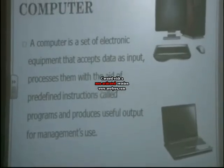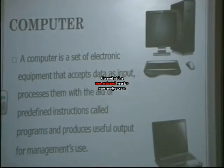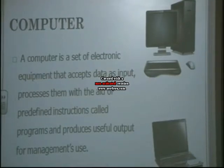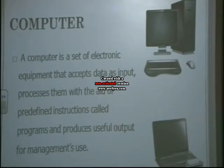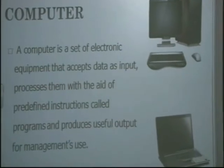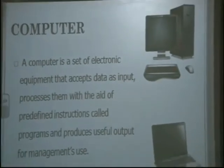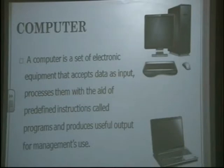The first is the computer. What is a computer? A computer can be seen as a set of electronic equipment that accepts data as inputs, processes them with the aid of predefined instructions called programs, and produces useful output for management's use. The key points are: number one, it accepts data as inputs; number two, it processes this data; and thirdly, it produces useful outputs.